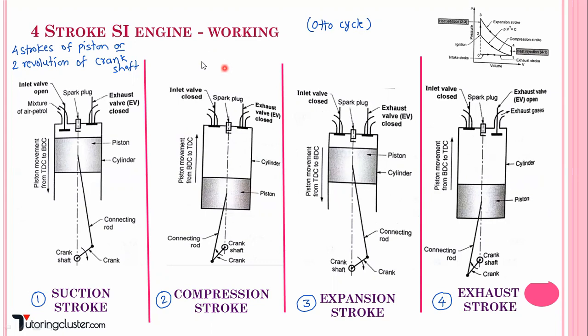For each stroke, you have to remember three things: first, the position of the inlet and exhaust valves — whether they are open or closed; second, how the piston is moving — whether it is going from top dead center to bottom dead center or vice versa; and third, what is happening inside the cylinder. If you can explain these three points for each stroke, that is going to complete your topic.